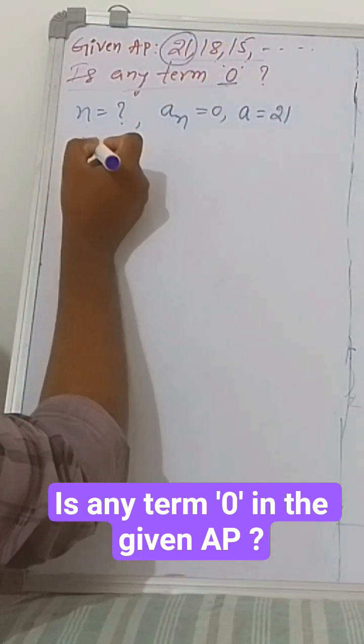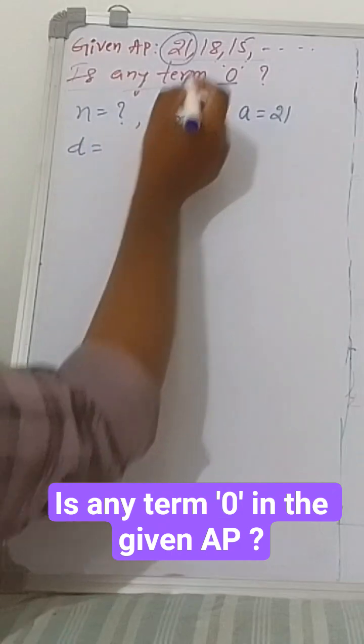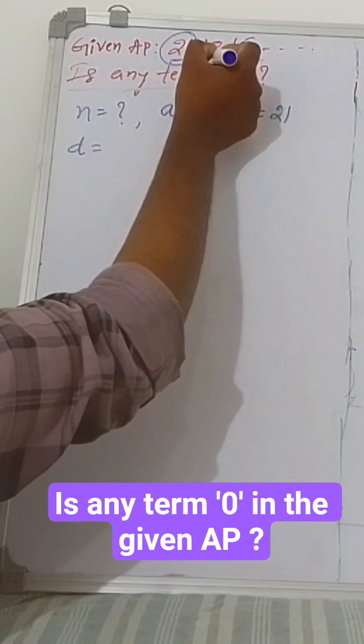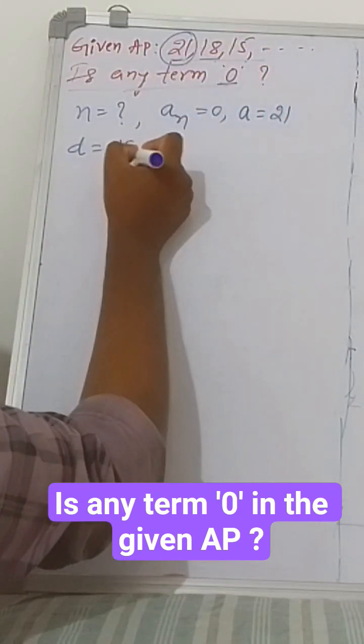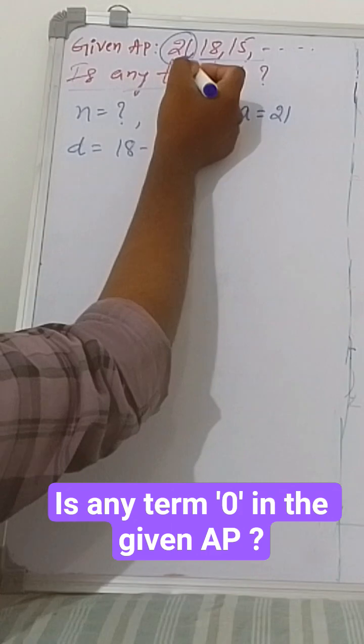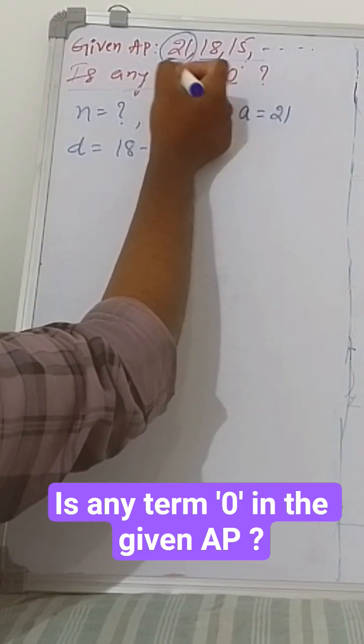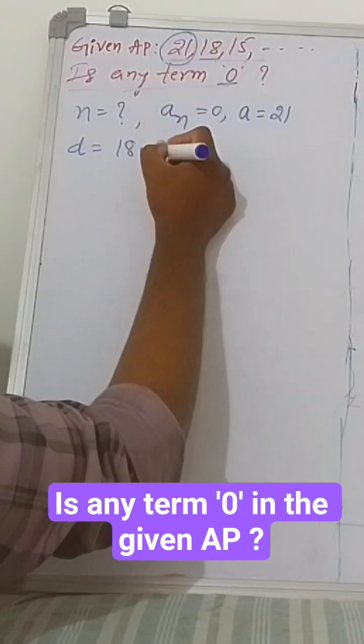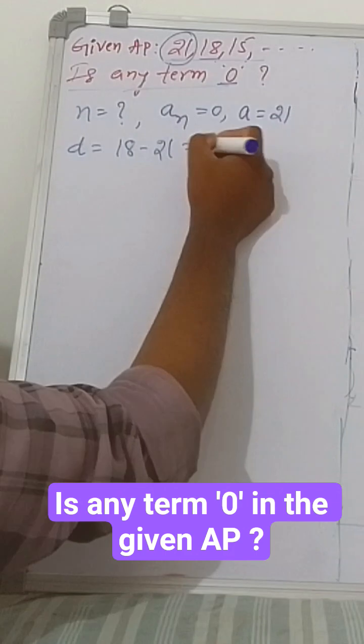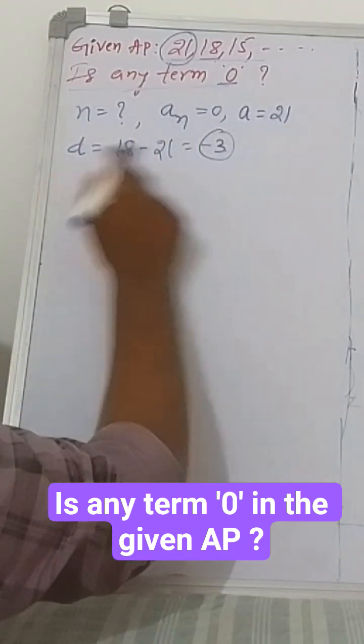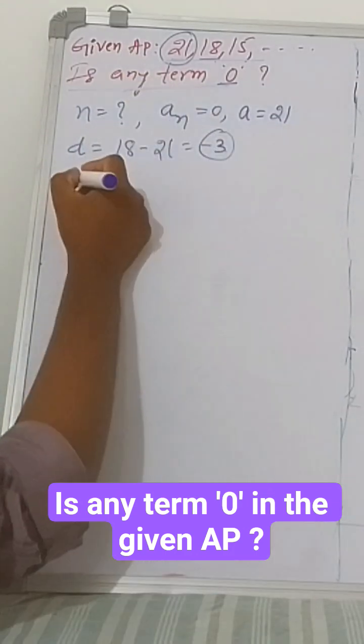Next, common difference d. We need to find it. Don't consider the first term, take any term - I would take 18. The previous term to 18 is 21. Take 18 minus 21, which is minus 3. So d equals minus 3.